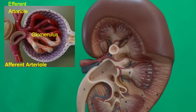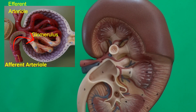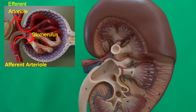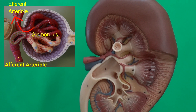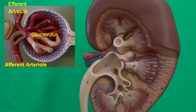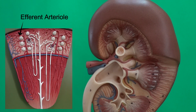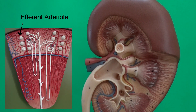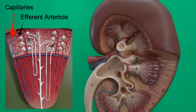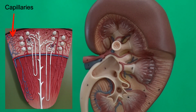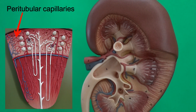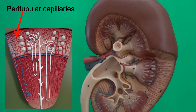Afferent arterioles send blood into the glomerulus, and efferent arterioles take blood out of the glomerulus. When we follow the efferent arterioles, we see that they branch off and form some capillaries — most of these capillaries wrap around the renal tubule. We refer to these capillaries as peritubular capillaries.